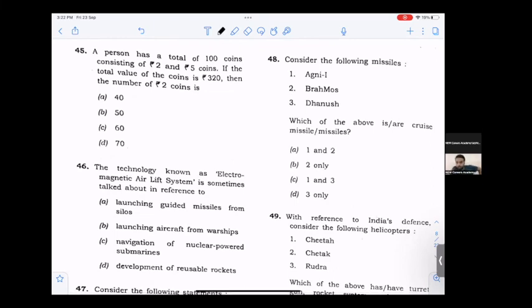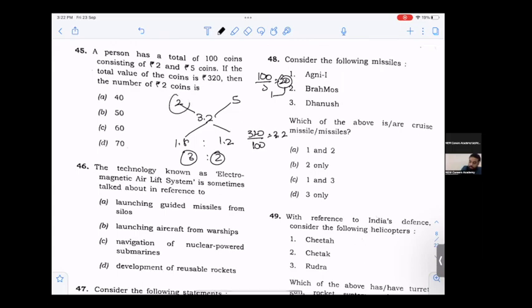A person has a total of 100 coins: 2 rupee, 5 rupee, and total value 320 rupees. Average is 3.2. Using alligation: 2 minus 3.2 equals 1.2, and 5 minus 3.2 equals 1.8. Ratio is 3 is to 2. So 5 rupee coins are 2 parts out of 5 total parts. 100 divided by 5 equals 20 per part. Therefore 2 rupee coins are 3 into 20 equals 60.